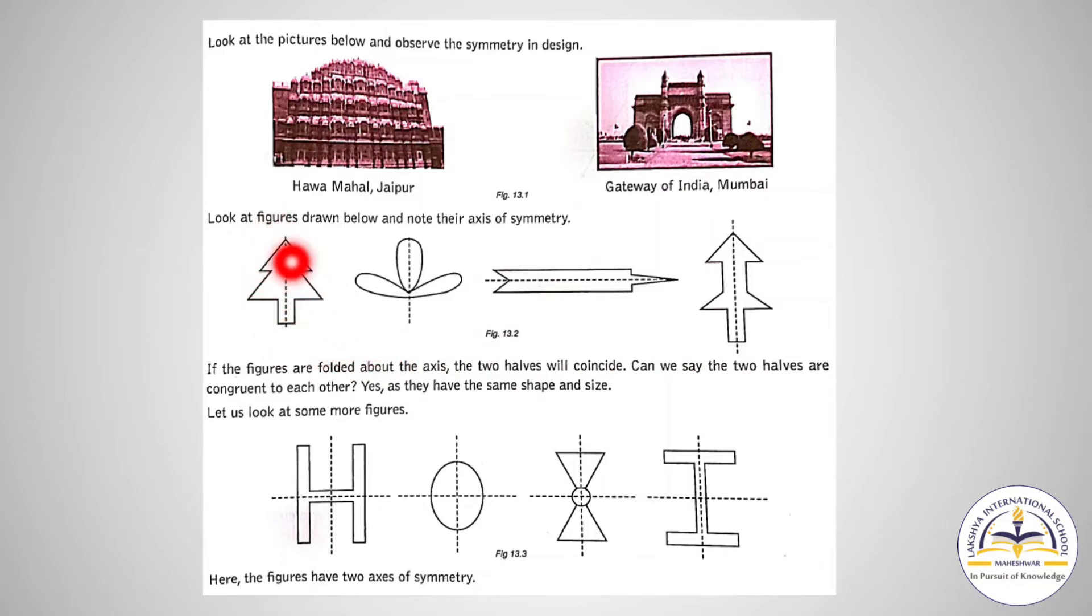Now for the letter H, you can see there are two axes of symmetry. For the circle and oval shape, there are two axes of symmetry. Now we will see the axis of symmetry of regular polygons.